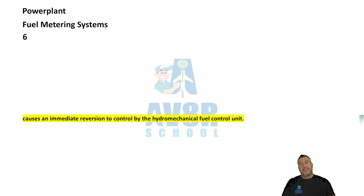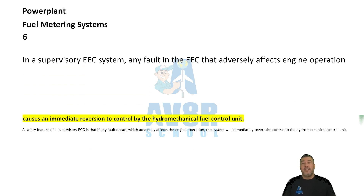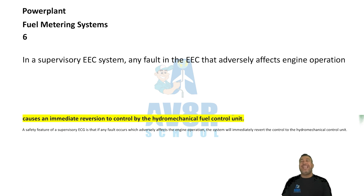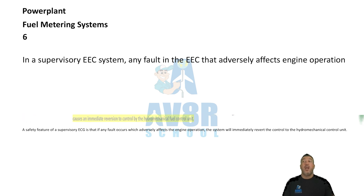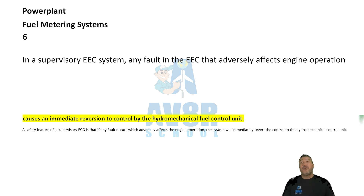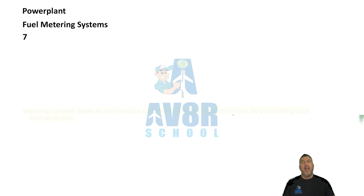Number six: causes an immediate reversion to control the hydro-mechanical fuel control unit. In a supervisory EEC, any fault in the EEC that adversely affects engine operations causes an immediate reversion to control the hydro-mechanical fuel control unit.